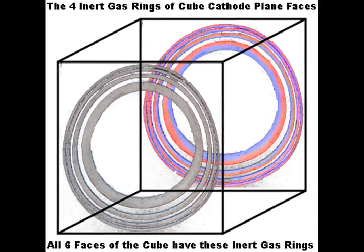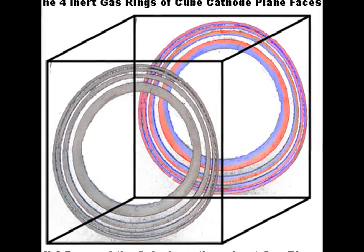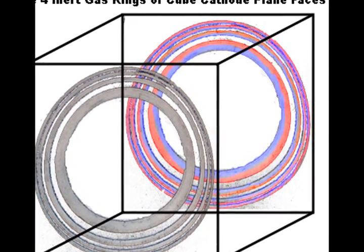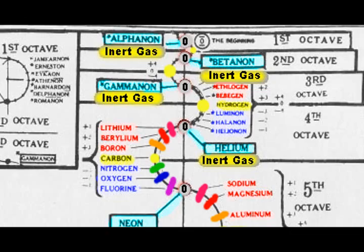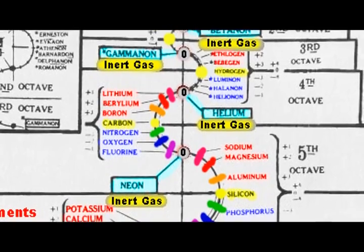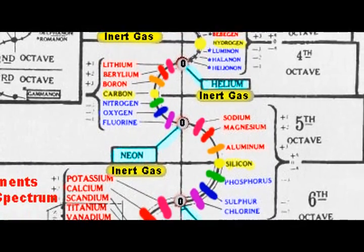These four rings are the seed of the octave wave and occupy that position in the wave known as the zero group of elements, or inert gases. You will note that an inert gas marked zero begins and ends each octave.